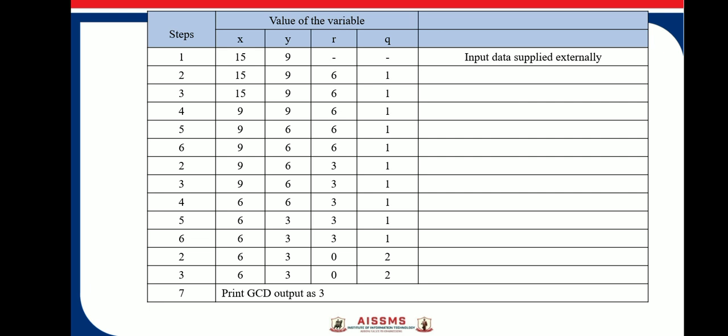Now here, reminder is 0. So therefore, we will compare R with 0. If it is 0, then go to step 7, which is occurred in step 3.